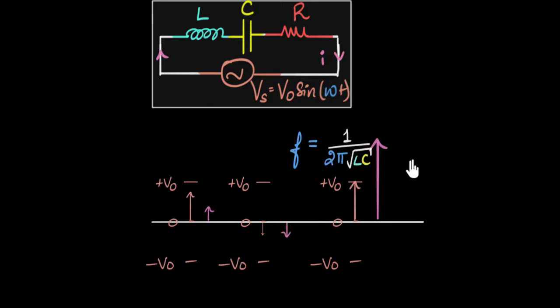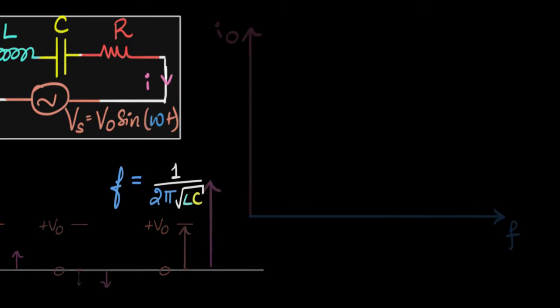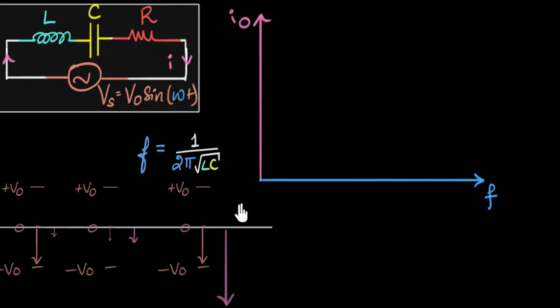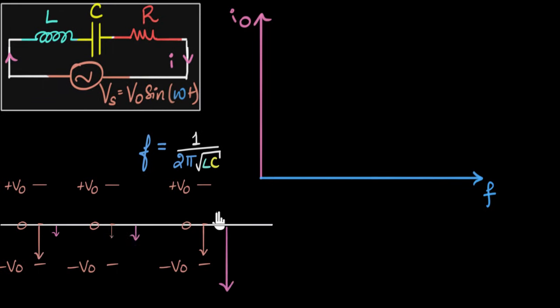What I want to do here is to understand this relationship between the frequency and the current a little bit better. One of the ways to do that is to draw a graph. So I want to plot a graph of the current I-naught versus the frequency. Before I draw it, I want you to take a shot at this. One clue is that we know that at resonant frequency, the current is maximum. Can you make a guess as to what this graph would look like?